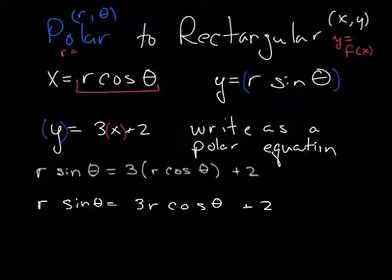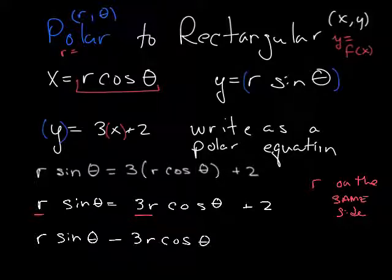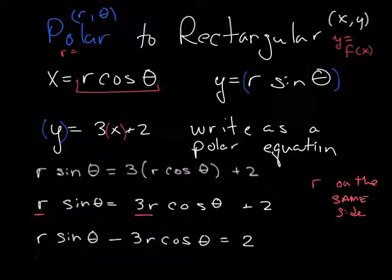Do you remember this trick where you have to get both R's on the same side? I'm going to get both R's on the same side. That then gives me R sine of theta minus 3R cosine of theta is equal to 2.